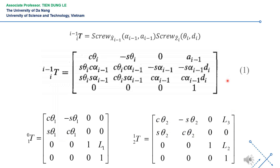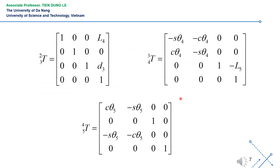Based on the results of the coordinate systems assigned to the robotic arm in the Denavit-Hartenberg parameter table, we can write the matrix equations that describe the orientation and position between the successive links of the robot, as shown on the slide. Specifically, we use the general formula 1 of the homogeneous transformation matrix from the modified Denavit-Hartenberg method. This matrix describes the orientation and position of the i-th link relative to the (i-1)-th link of the robot. By substituting the parameters and variables from each row of the Denavit-Hartenberg parameter table into general formula 1, we obtain the homogeneous transformation matrices. Continuing to substitute the parameters from rows 3, 4, and 5 of the table, we obtain the remaining homogeneous transformation matrices as shown on the slide.